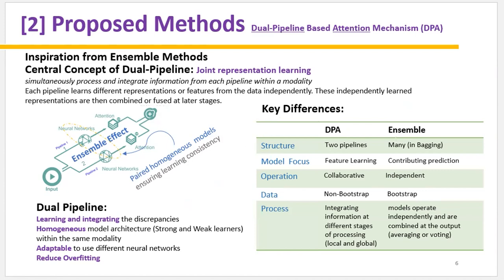However, there are some differences. DPA has two pipelines, because three or four are likely to have overfitting issues. DPA focuses on feature learning instead of contributing to prediction, so there are no predictions all the way through until the very end. DPA models work collaboratively and also use a bootstrapped data — the same data for each pipeline. And lastly, it integrates information at different stages.